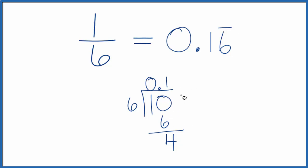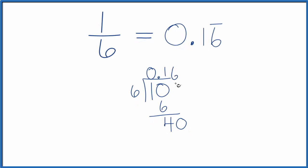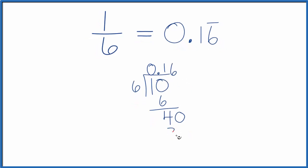Since 6 doesn't go into 4, we'll put a 0 here and move over 1. 6 goes into 40 six times, right? 6 times 6 is 36.